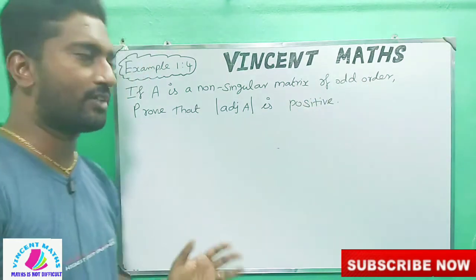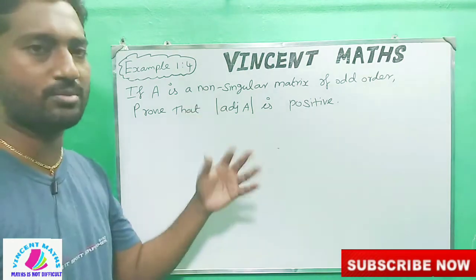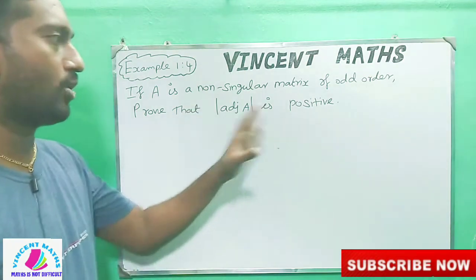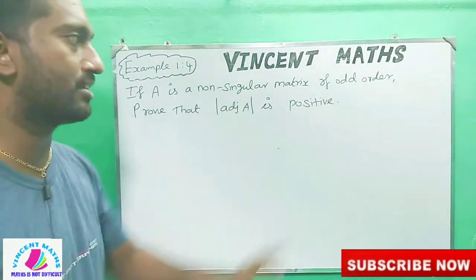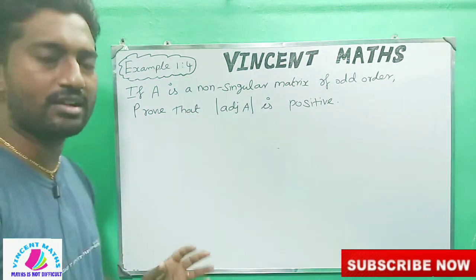Okay friends, non-singular is bijective and bijective. That is odd order.